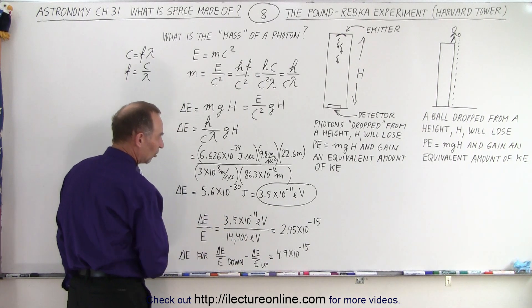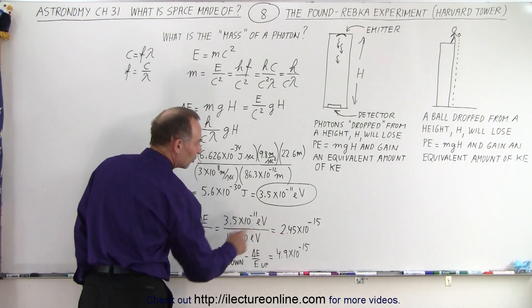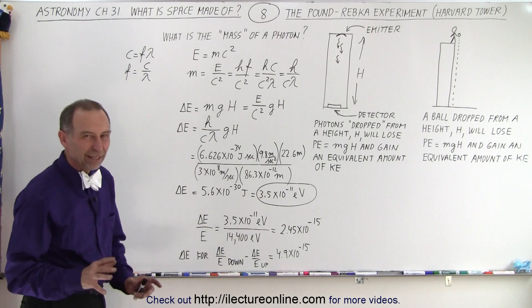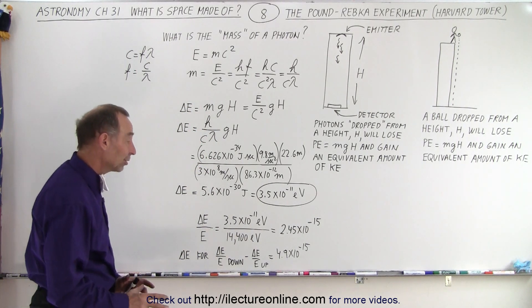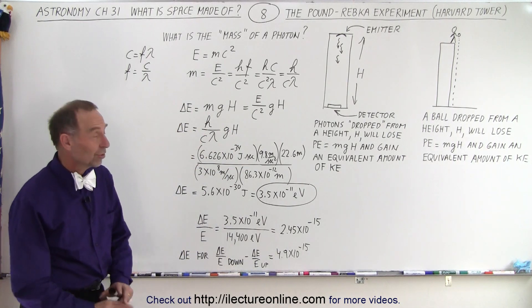They did it both ways so that the sum would be double that, and then they took the ratio of the change in the energy divided by the original energy. They doubled that ratio by taking it up and down to get a better result. When they then compared that, the expected value was right around 5 times 10 to the minus 15. It was an amazing success, very very close to the expected result.